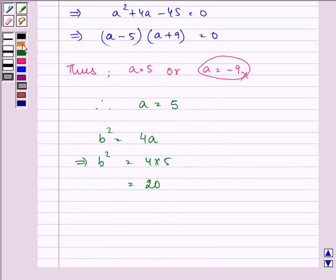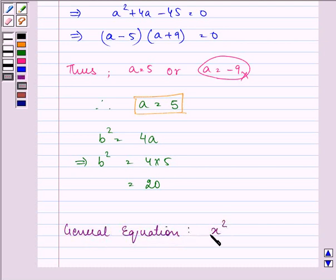Now we know the value of a as well as b square. So we can have the general equation of the hyperbola as x square by 25 minus y square by 20 equals 1.